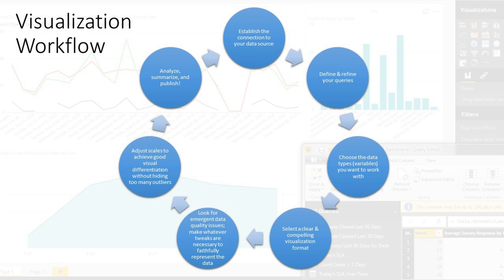As you try out different options — which you should definitely do — look for emergent data quality issues. Each time you change how you're looking at data, you might encounter parts that are incomplete and messing up your analysis, or values that should be the same but were entered differently. You'll need to adjust for that to get a robust analysis. You may also need to adjust your scales — if very large values are drowning out smaller ones, you may need to let the outliers fall off the scale temporarily so you can focus on differences in smaller values.